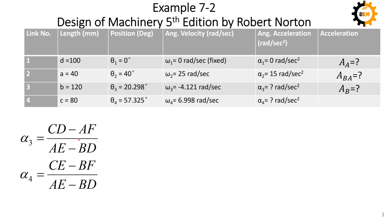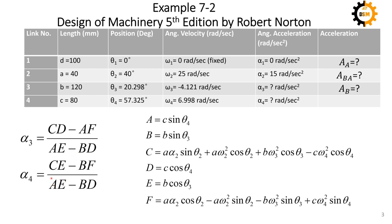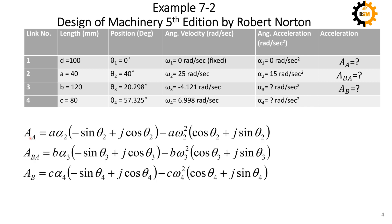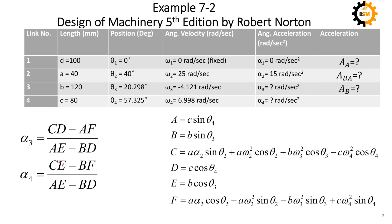We have already developed equations that contain constants in the form of A, B, C, D, E, F. These six constants can be calculated using the given equations, where all variables are already given in the table. Once we calculate A through F, we can find alpha 3 and alpha 4. In the next stage, we calculate the linear accelerations using equations that are already given — we insert all the known values to find the unknowns.